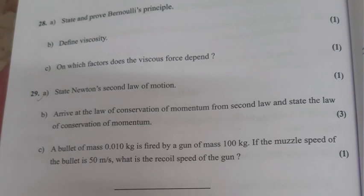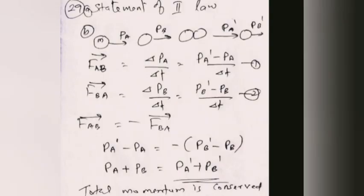Question 29, Part A: State Newton's second law of motion. Part B: Arrive at the law of conservation of momentum from the second law. The net force on a system equals the rate of change of momentum: F_AB equals ΔP_A by Δt equals (P_A1 minus P_A) by Δt. When no external force acts, total momentum is conserved.